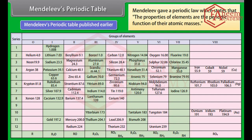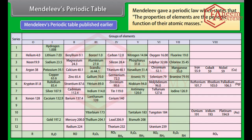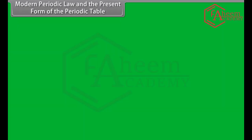Mendeleev's Periodic Table: Mendeleev gave a periodic law which states that the properties of elements are the periodic function of their atomic masses. Uses of Mendeleev's Periodic Table: First, elements are classified into groups with similar properties, facilitating the study of properties of elements. Second, Mendeleev left certain vacant places in his table, which provided a clue for the discovery of new elements. For example, both gallium and germanium were not discovered when Mendeleev proposed his table; he named these elements Eka-aluminium and Eka-silicon respectively. Third, with the help of this table, doubtful atomic masses of certain elements were corrected.